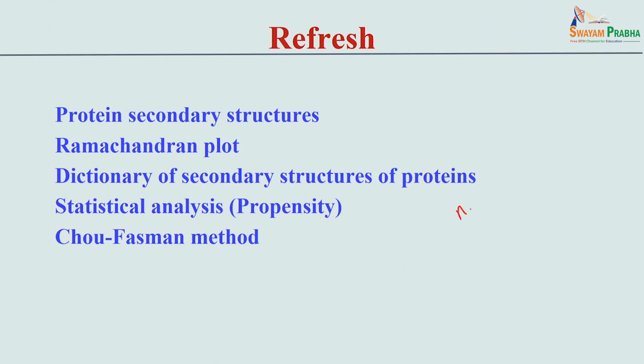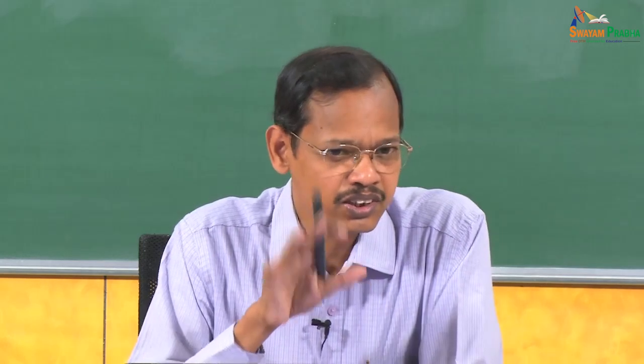To get propensity values, for any residue i in a specific conformation such as alpha helix, you divide the count of residue i in helix by the total number of residues in the protein, then normalize. If the value is more than 1, the residue is preferred in alpha helix; if less than 1, it is not preferred.